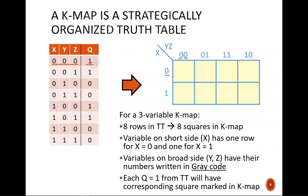Q equals 1, so we fill in a 1 to that square. The next row has inputs X equals 0, Y equals 0, and Z equals 1. That corresponds to this square of the K-map. Notice how we can read the inputs of 0, 0, 1 from the row and column labels. And the output is 1 in that row of the truth table, so we fill in a 1 in the K-map. We can continue this process of translating the truth table to the K-map.